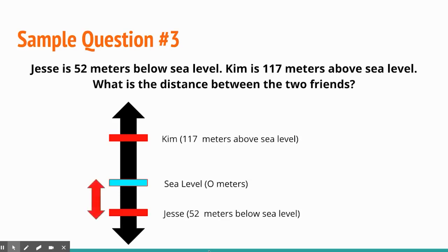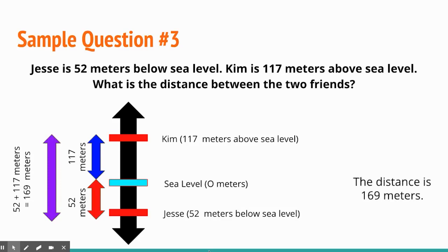And then we start to find the distance between the two friends. Now we know from Jesse to sea level is 52 meters. And then once, so Jesse imagined has to swim up 52 meters to even get to sea level. And then we'd have to continue another 117 meters to even get to Kim. So to find the total distance, we ended up having to put those two numbers together. So 52 plus 117 will give us 169 meters. So the distance between these two are 169 meters.